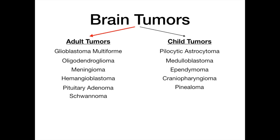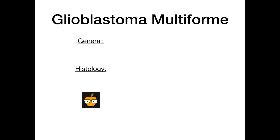We're going to start by talking about the tumors of adulthood, focusing on the left side of this chart. As I go through the video, we're going to talk about what you need to know about each tumor, what you'll see on histology, and then I'll wrap up by giving you the mnemonics. After we cover all the adult tumors, we'll transition into the tumors of childhood and simplify everything.